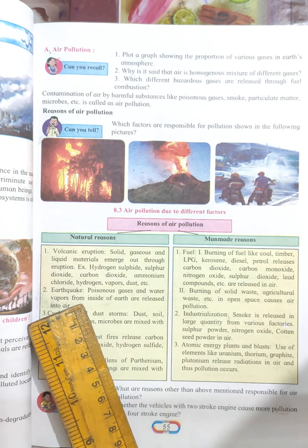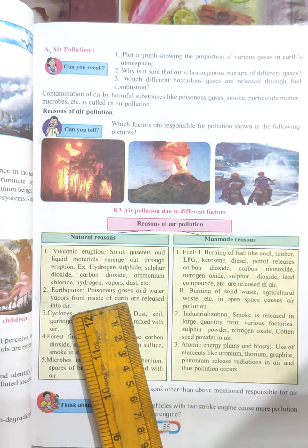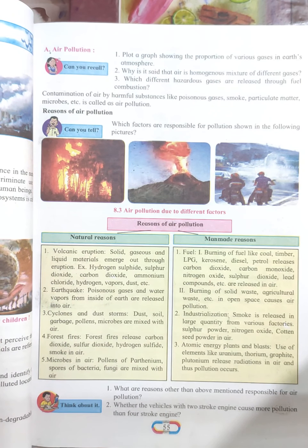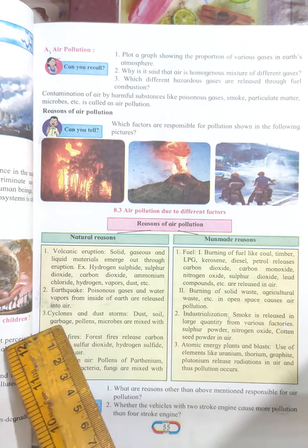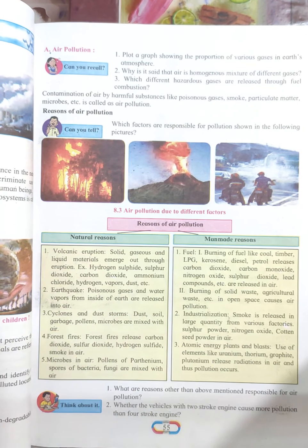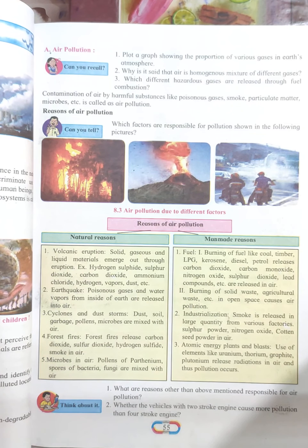ammonium chloride, hydrogen vapors, dust, etc. Next is earthquake — poisonous gases and water vapors from inside the earth are released into the air when an earthquake occurs. Next: cyclones and dust storms, which mix dust, soil, garbage, pollens, and microbes into the air.